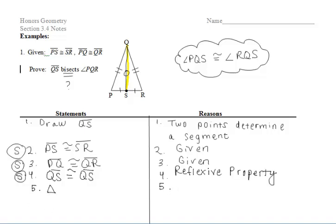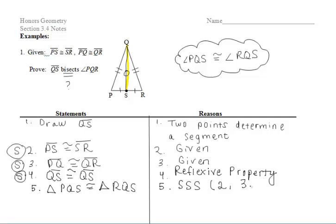Now when we're writing that the two triangles are congruent, make sure that you're writing it in the same order. So if you label the first triangle PQS, you have to say it's congruent to triangle RQS. And that's because of side, side, side. We mentioned our first pair of congruent sides in step two, our second pair in step three, and our third pair in step four.